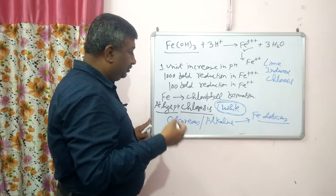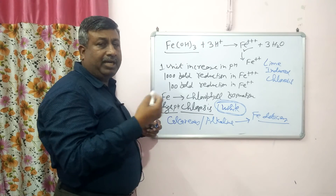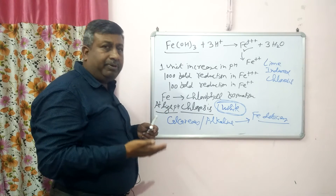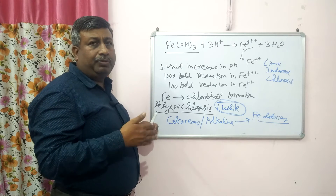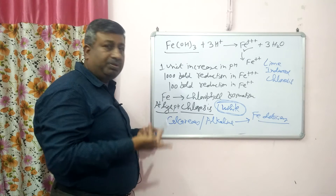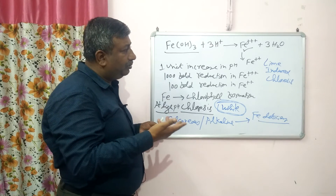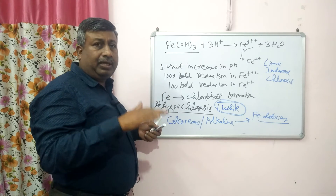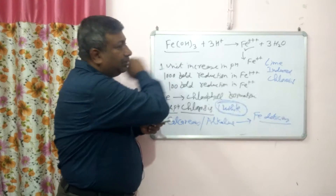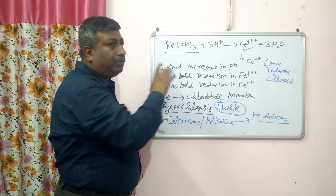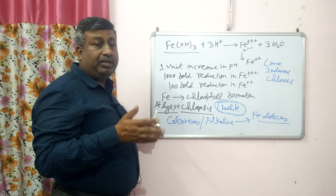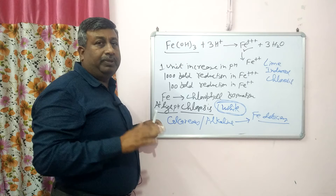Lime-induced chlorosis is related to iron deficiency. When lime is added to soil, pH rises, iron availability is reduced, chlorophyll cannot be formed, and chlorosis results. Even though iron is present in the soil, it is converted into the insoluble hydroxide form due to high pH. This is why iron deficiency is very common in calcareous and alkaline soils.